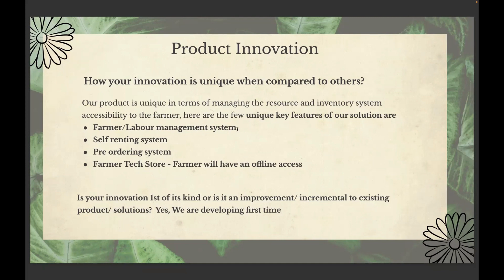The other 80% take loans, do agriculture, and then have to repay the banks. So the self-renting system is basically farmers renting equipment among themselves — including the latest technologies used in the agri sector — so the burden is reduced. Not every farmer has the capability to purchase the latest equipment for cropping and harvesting. That's why we are planning a self-renting system among farmers.